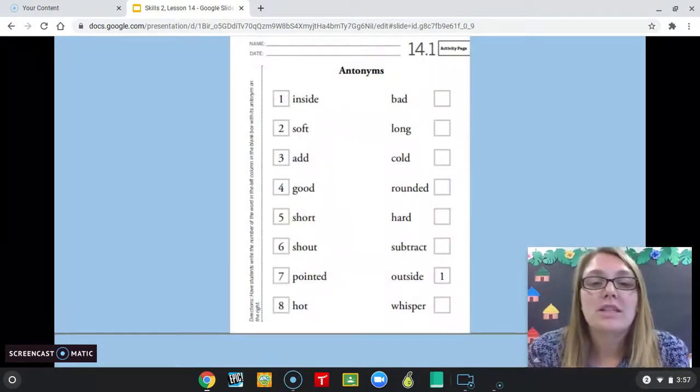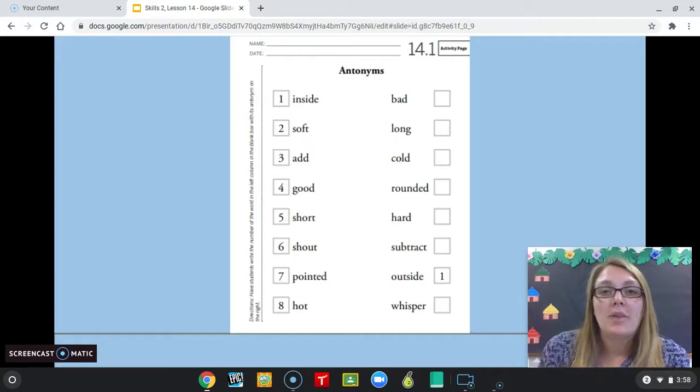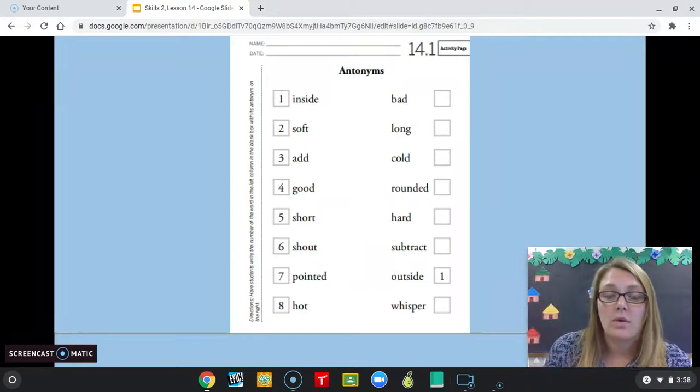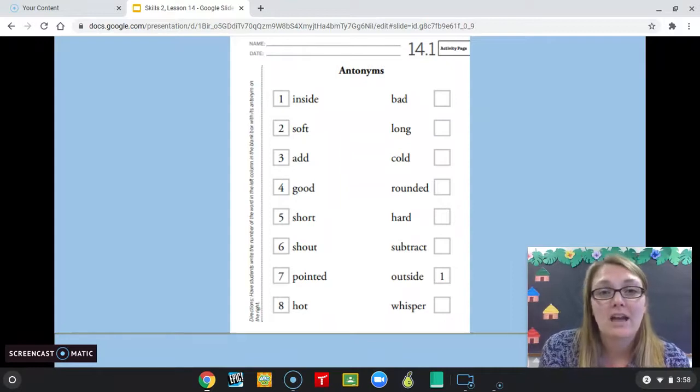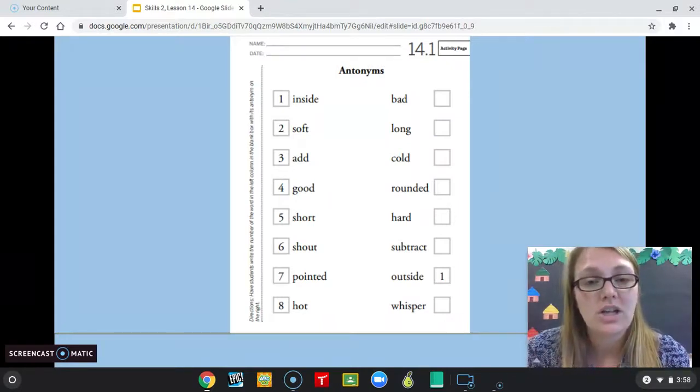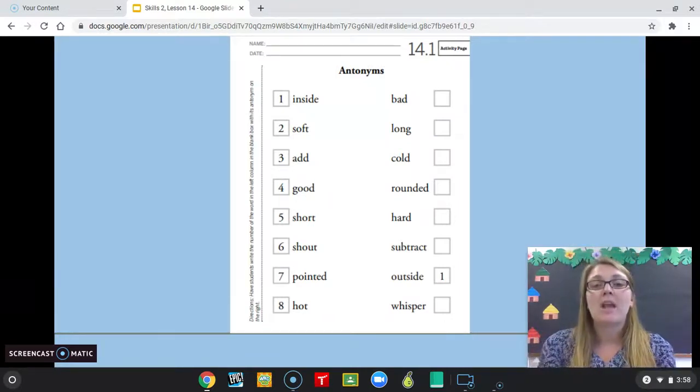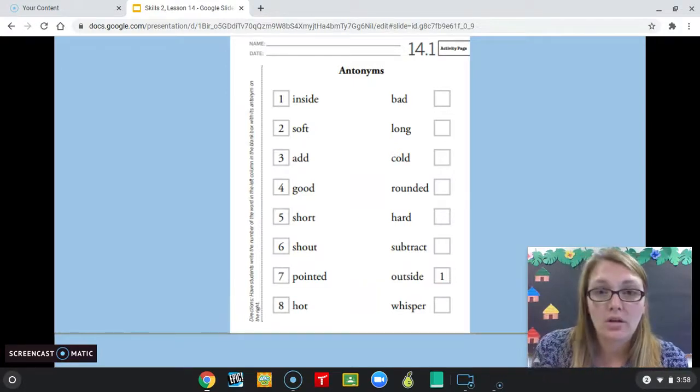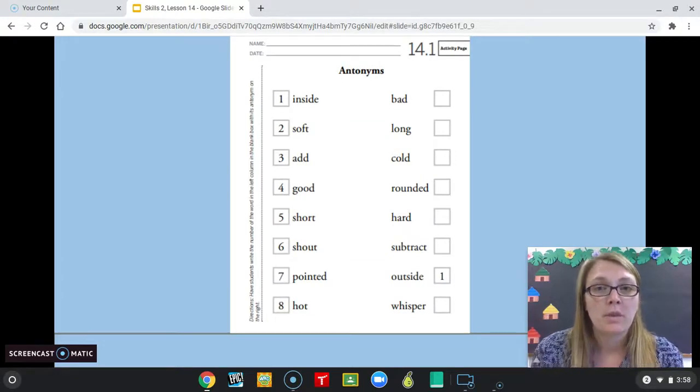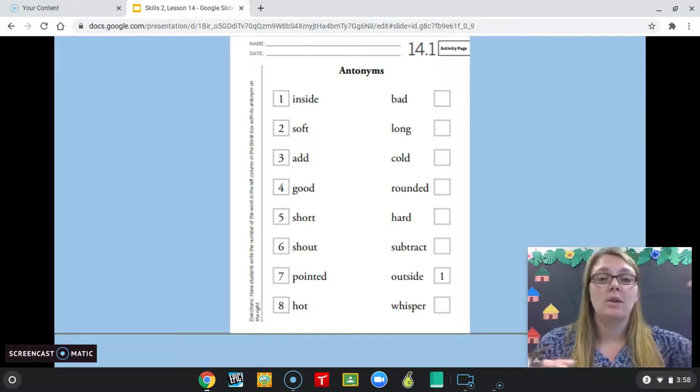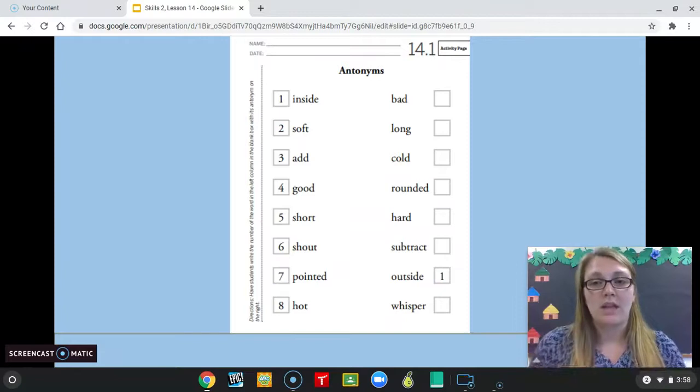Okay. You're going to continue doing this on the activity page. So you're going to match the word on the left with its antonym on the right. On the left, we have inside, soft, add, good, short, shout, pointed, and hot. On the right, it's bad, long, cold, rounded, hard, subtract, outside, and whisper. You'll see they did number one. So number one is inside, and then they marked outside as number one, because inside and outside are opposites. So you're just going to match the words that make the antonym pair.